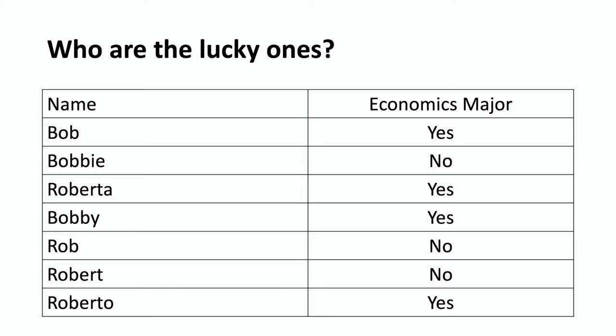Here's a small data set showing information on some people — whether or not they're an economics major. And since being an economics major is a category, you can indicate it by yes or no. So Bob is an economics major, Bobby is not, Roberta is an economics major, Bobby is an economics major, Rob is not an economics major, Robert is not an economics major, and Roberto is an economics major.